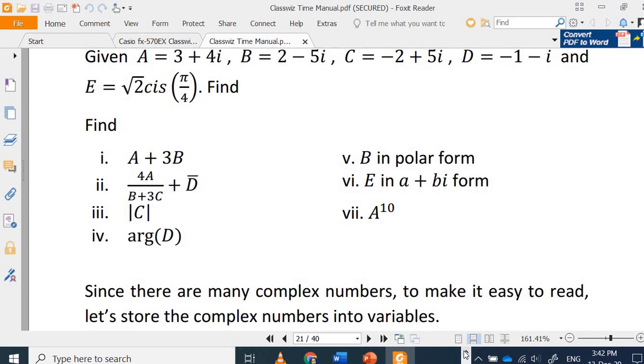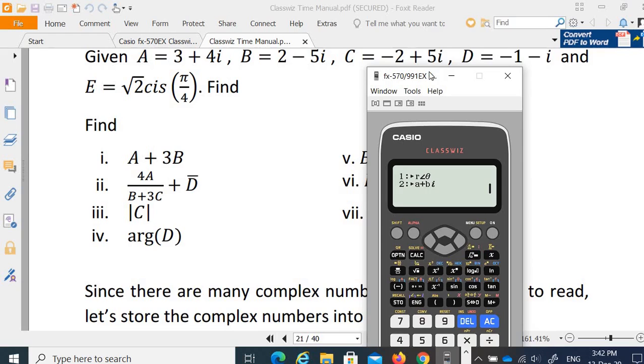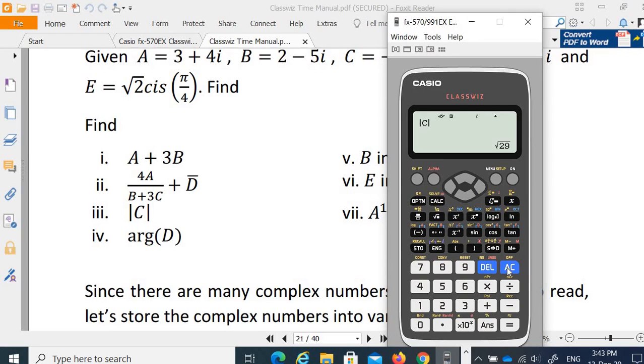So this is 2 plus 3i stored in variable 2. If I want to key it into the form r angle theta, this is √2 angle π over 4. To get the angle, shift angle. Shift angle, and then shift, click 5 divided by 4. Let's say, and store 2.